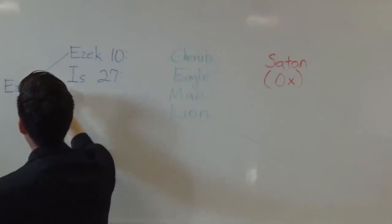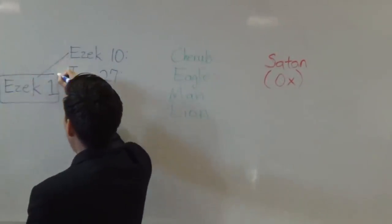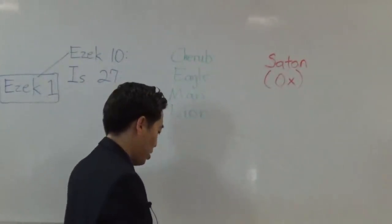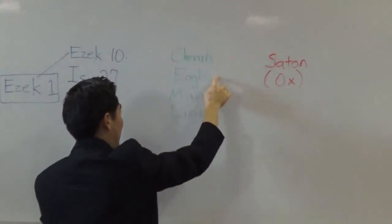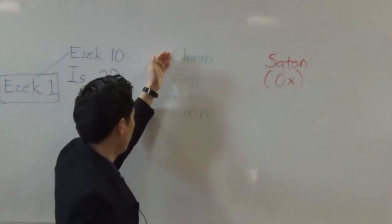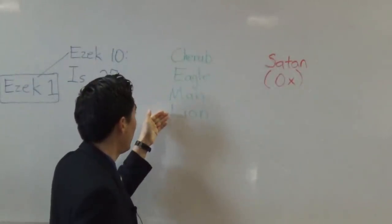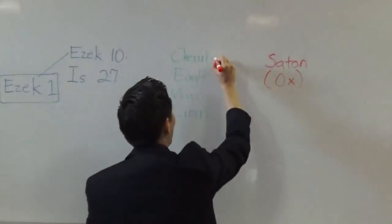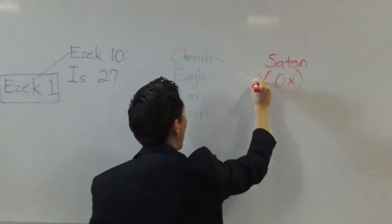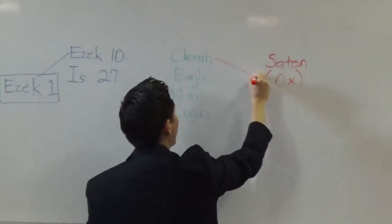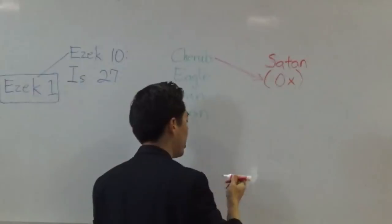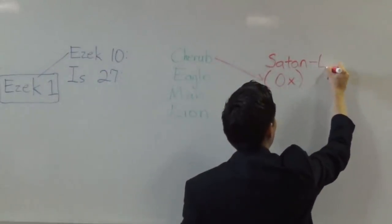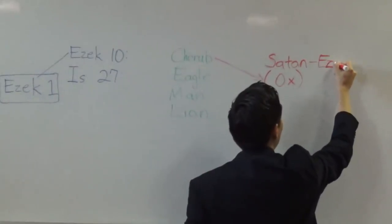Ezekiel 1 names these four cherubims. It would say: ox, eagle, man, lion. There's something different here — when I say ox, eagle, man, lion, that means the cherub is the ox. Now, who is known to be called the cherub? If you look at Ezekiel chapter 28, it shows that Satan is the cherub — he is known to be the cherub. That's where we are able to figure out that he's definitely known to be the ox.